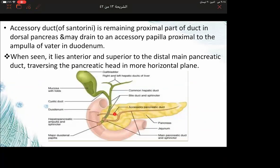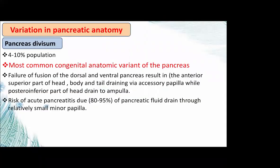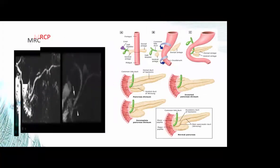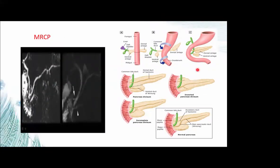The remaining proximal part of the dorsal pancreatic duct becomes the accessory pancreatic duct, draining into the minor papilla, superior to the dorsal main pancreatic duct. Variations in pancreatic ducts — the most common congenital anomaly — result from failure of fusion of the dorsal and ventral pancreatic ducts, resulting in the anterior superior part draining into the minor papilla.